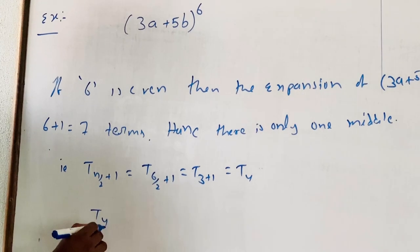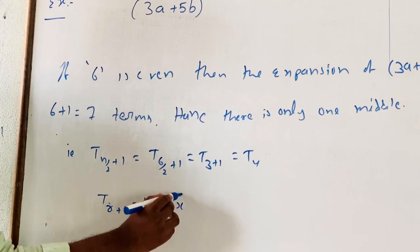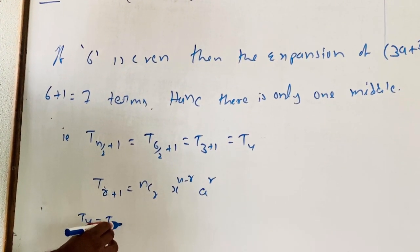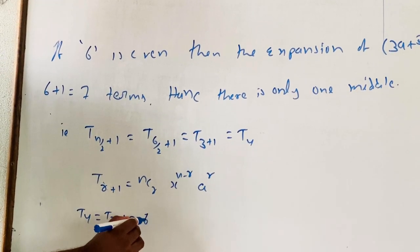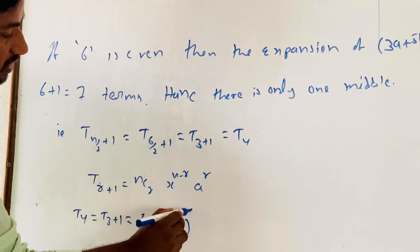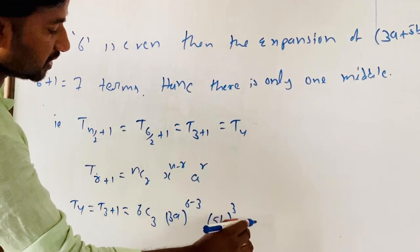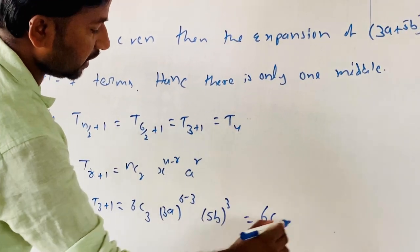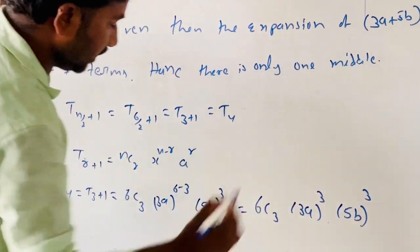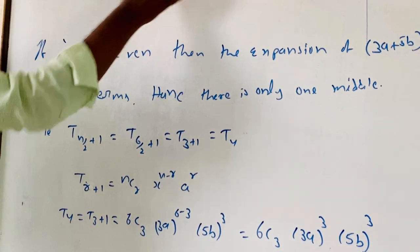Now finding the value of T4. Using the general formula T(r+1) = nCr · x^(n−r) · a^r, we get T4 = T(3+1) = 6C3 · (3a)^(6−3) · (5b)^3. That equals 6C3 · (3a)^3 · (5b)^3. So T4 is the middle term in the expansion of (3a + 5b)^6.